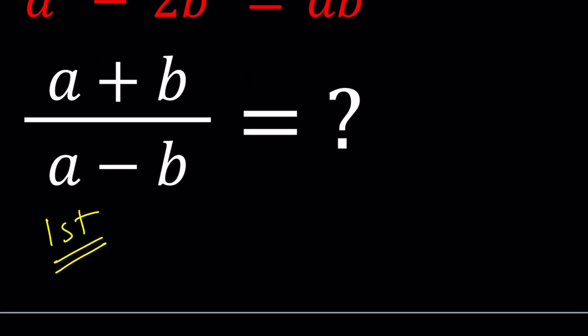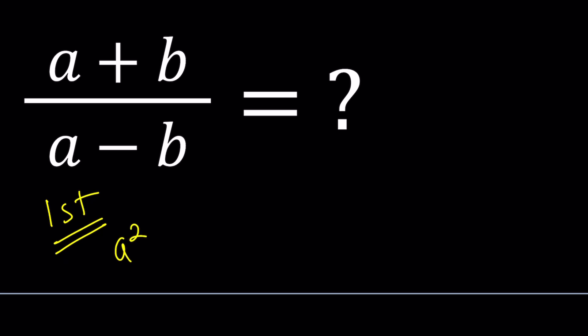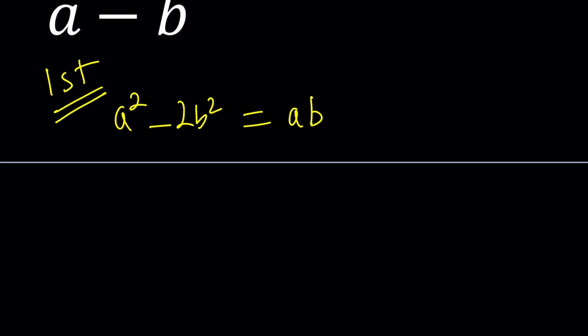Let's start with the first method. I have a squared minus 2b squared equals ab. I want to put everything on the same side: a squared minus ab minus 2b squared equals zero. I want the ab in the middle. This is a quadratic equation. Even though there are two variables, it is quadratic.